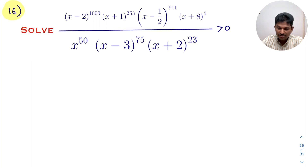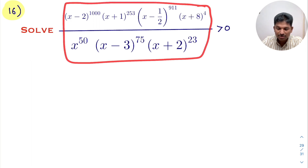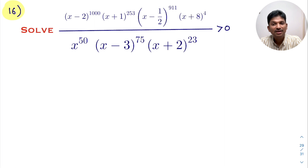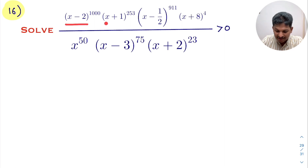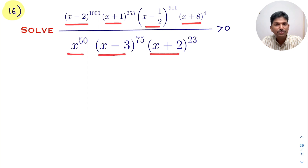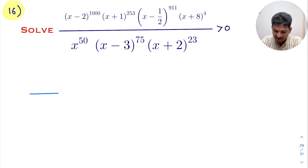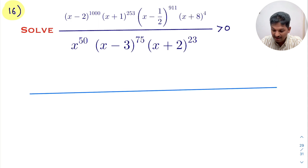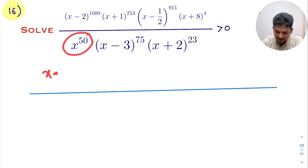Now observe the third question — it is also a rational function. Make sure the denominator is not equal to 0. All x coefficients are 1, so all are standard linear factors and we can directly mark the number line.